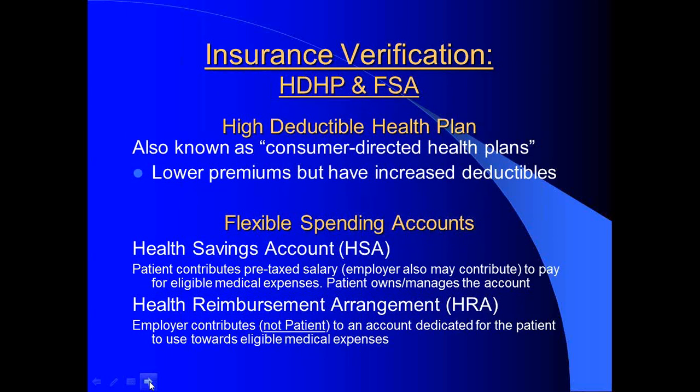One of the biggest changes we are going to be seeing — and I'm sure you've already had some exposure to them — are the high deductible health plans, also known as consumer-directed health plans. These plans have much lower premiums but very high deductibles. Where deductibles used to range from $500 to $1,500, these are starting at $4,500 and ranging to $15,000.